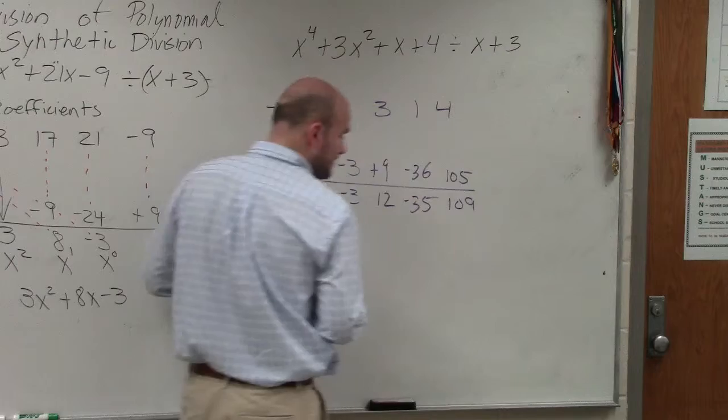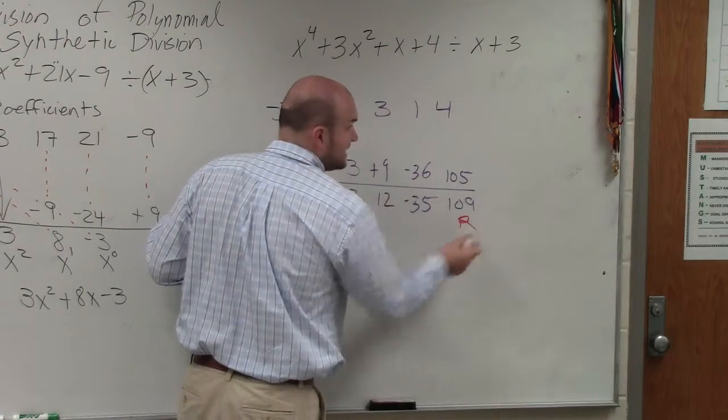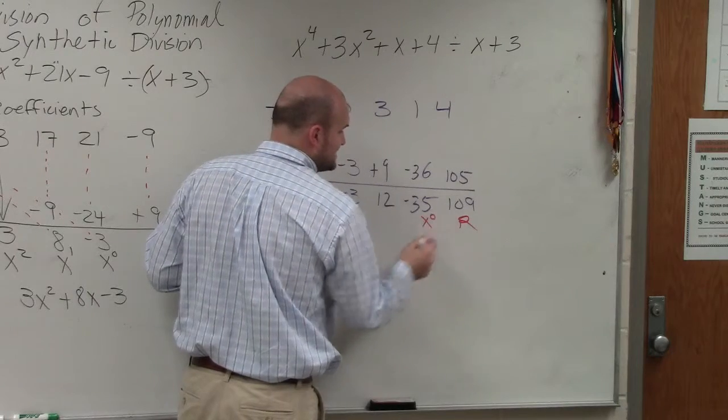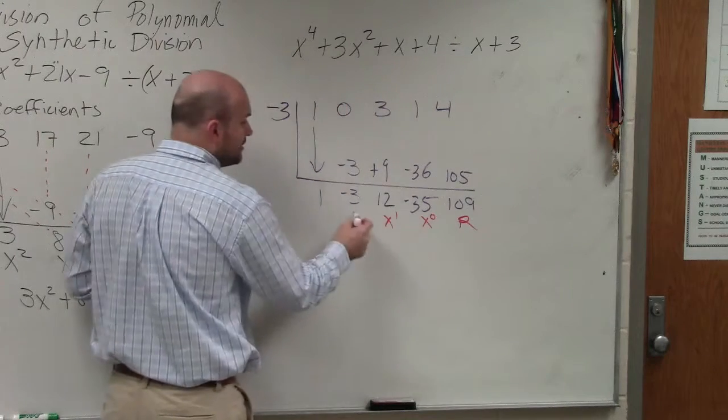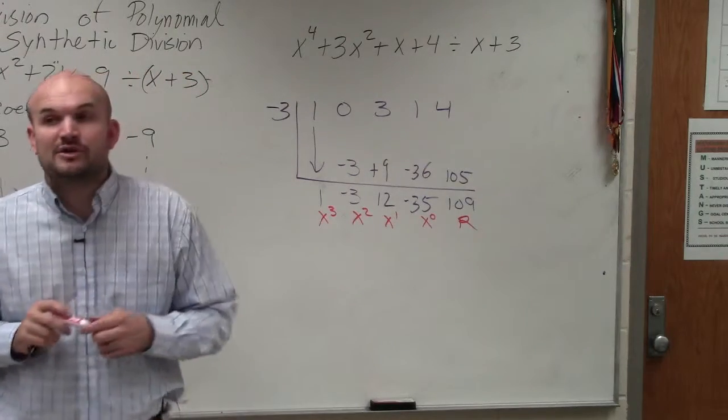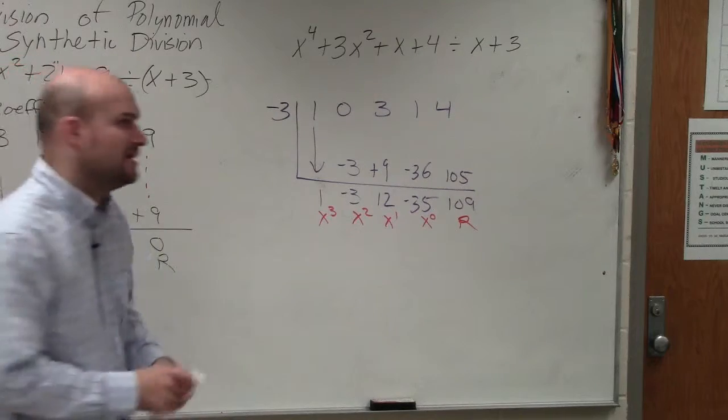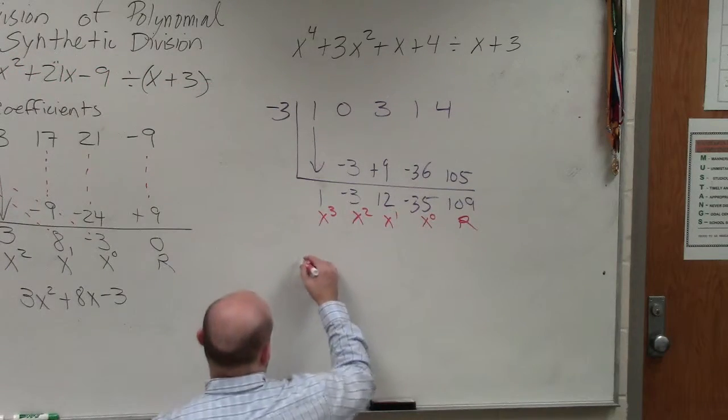So to label this, that is my remainder, my constant, my linear, my quadratic, and my cubic. Please remember to take whatever your remainder is over your divisor when you're writing your final answer. So the final answer is, as you can see,